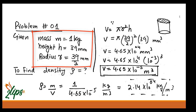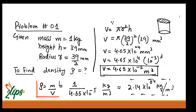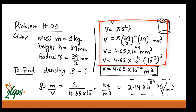We know the mass is 1 kg, the height of the cylinder is 39 millimeters, and the radius is 39/2 millimeters because 39 is the diameter. Density is equal to mass per volume. The mass is 1 kg, but we need to find the volume. The formula for volume of a cylinder is π r² h, and we can put the values in.